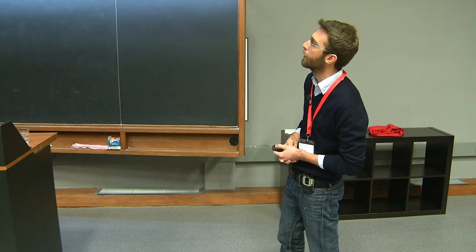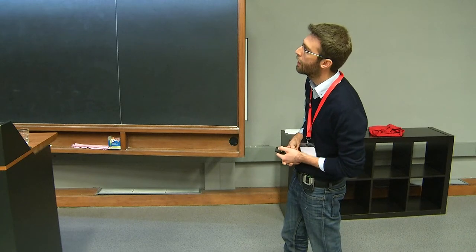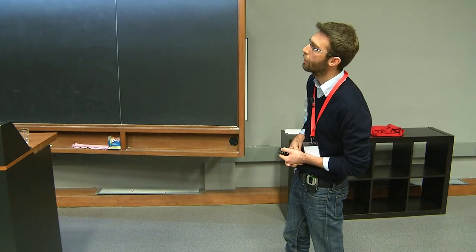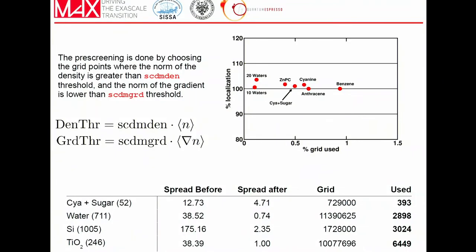Using this prescreened algorithm, we can go towards very large systems. For example, we have a cluster of 700 atoms — 240 water molecules — where the total real-space grid is 11 million points. We could perform the localization using only 3,000 points. With this algorithm, we can perform fast orbital localization in an efficient way for large systems.